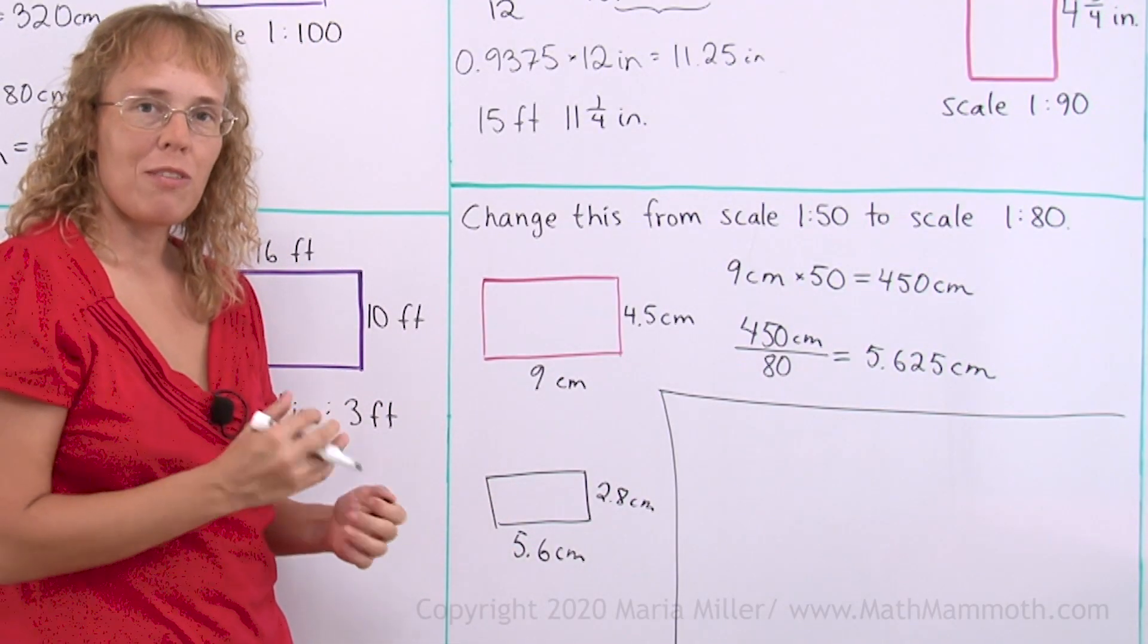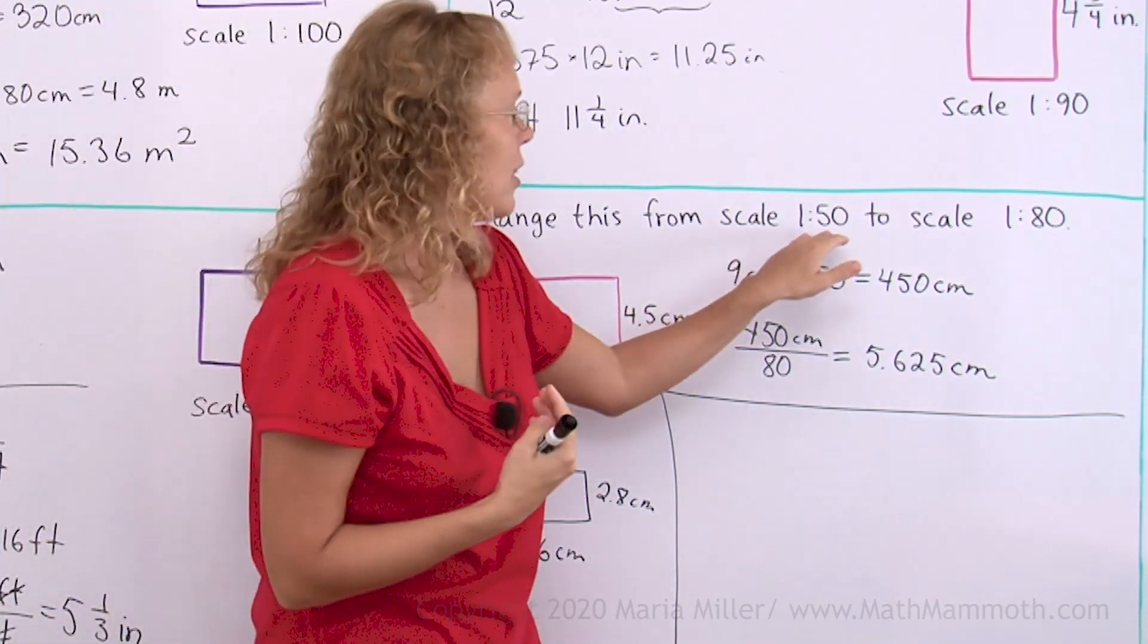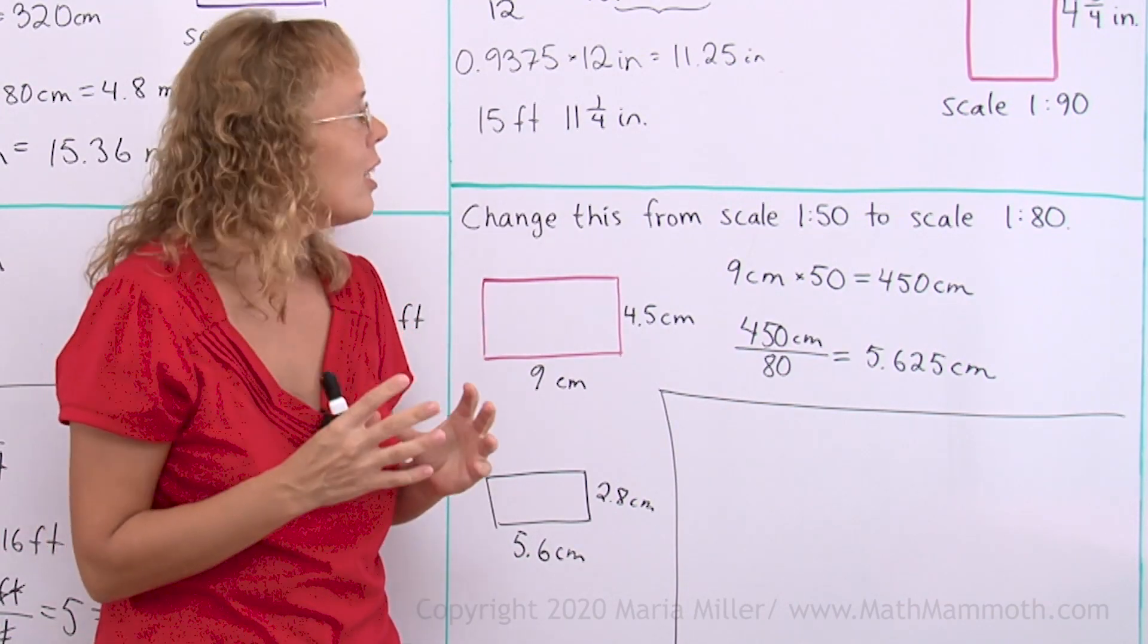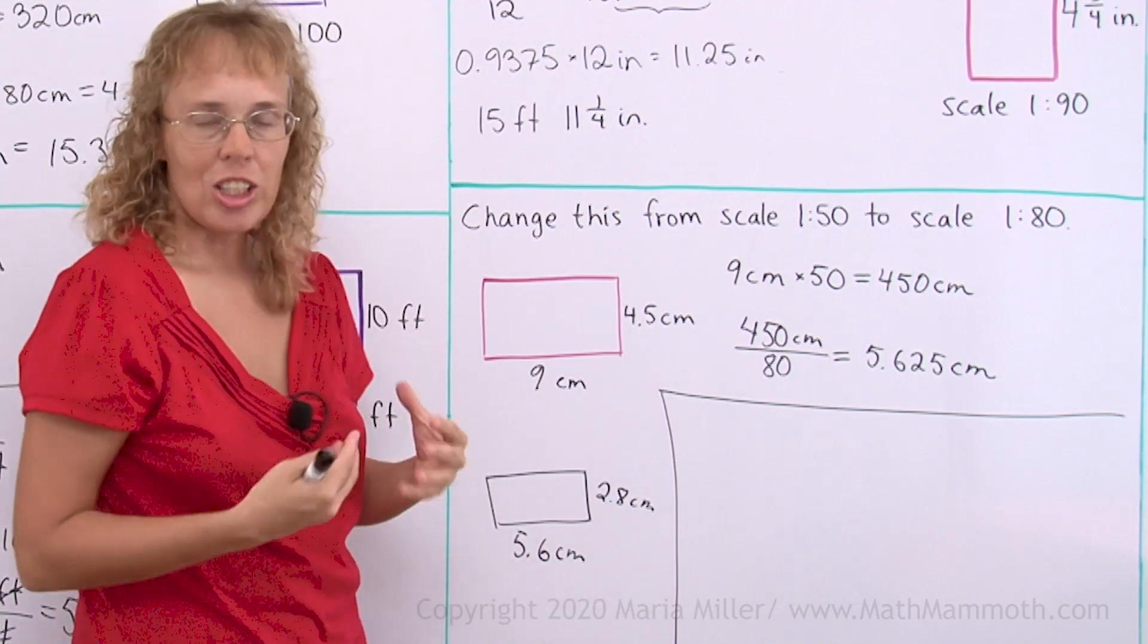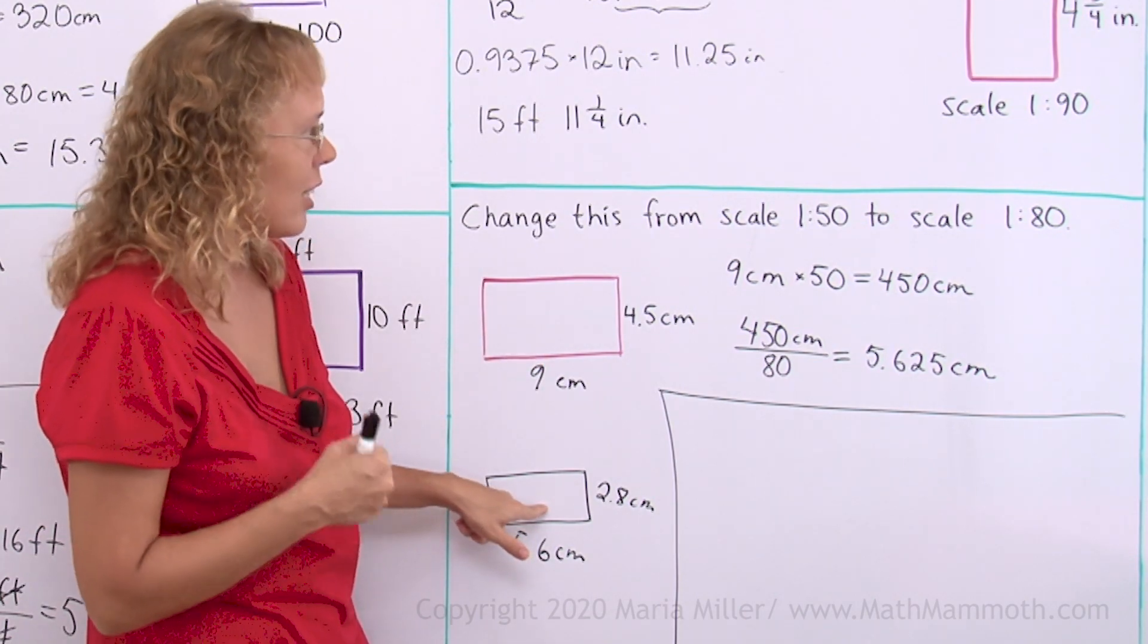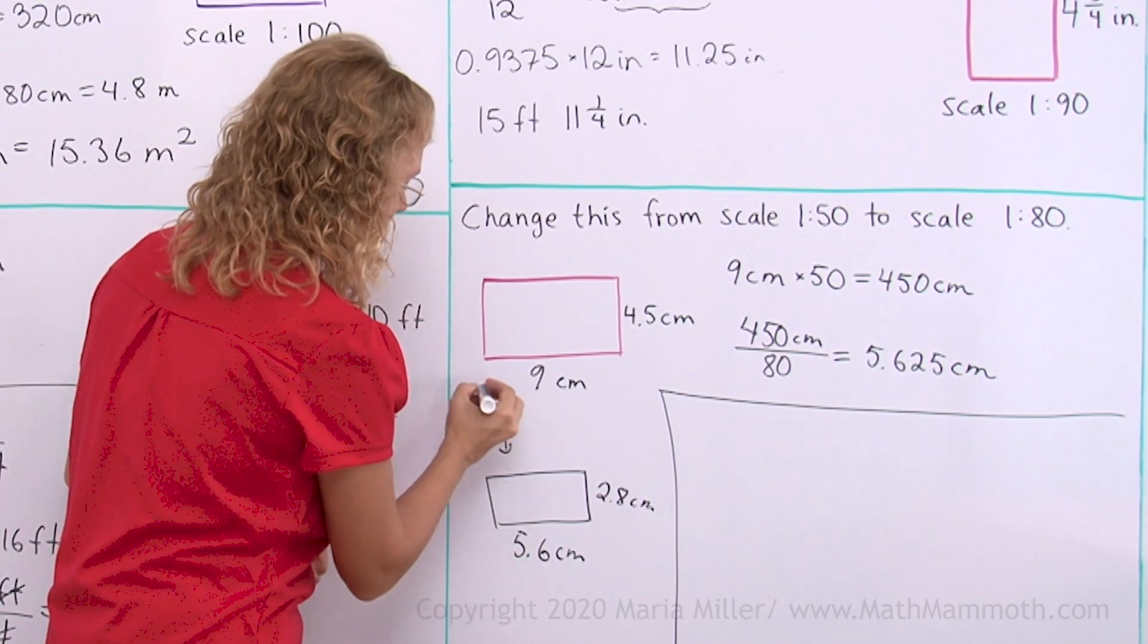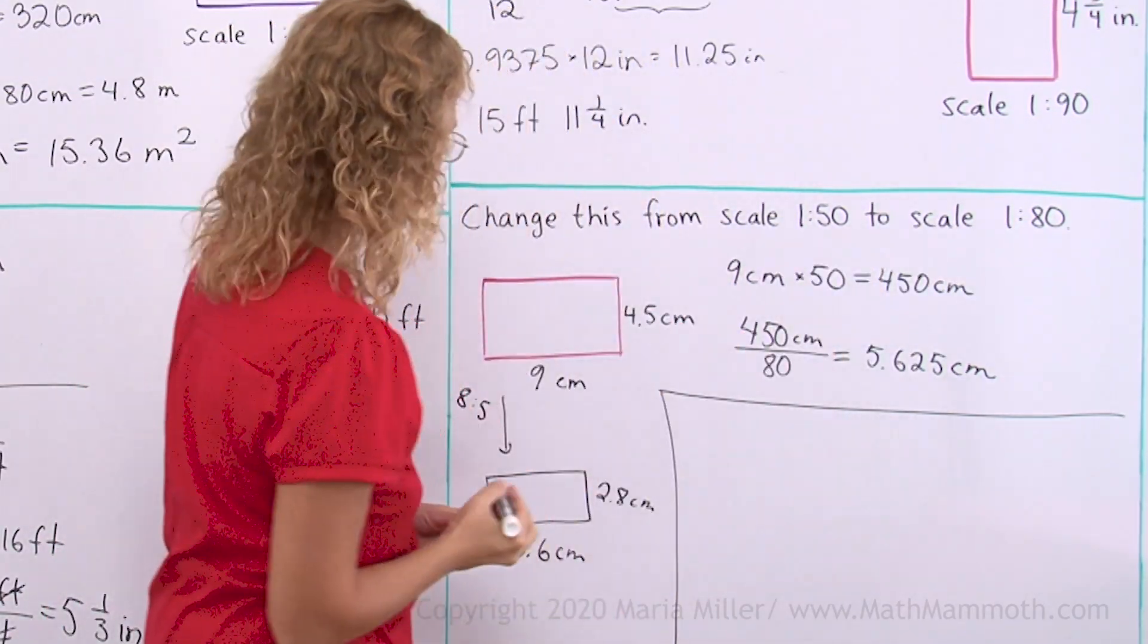I will also show you another way to solve this problem. If you can figure out that changing from this scale to this scale means that it will actually shrink, it will get smaller, then you can look at these numbers 50 and 80 and get the scale ratio when we are changing this to this. We are shrinking in the ratio of 8 to 5. The ratio between these two is actually 8 to 5, getting it from the 80 to 50.